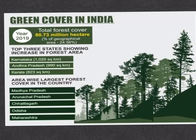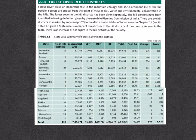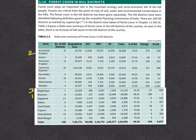In terms of area-wise largest forest cover in the country, Madhya Pradesh is placed first, closely followed by Arunachal Pradesh, Chhattisgarh, Odisha, and Maharashtra. There are 140 hill districts in the country. In terms of the percentage of total forest area with respect to total geographical area, Mizoram comes first, followed by Arunachal Pradesh and Meghalaya. The sharpest decrease has been observed in Manipur, followed by Arunachal Pradesh and Mizoram.